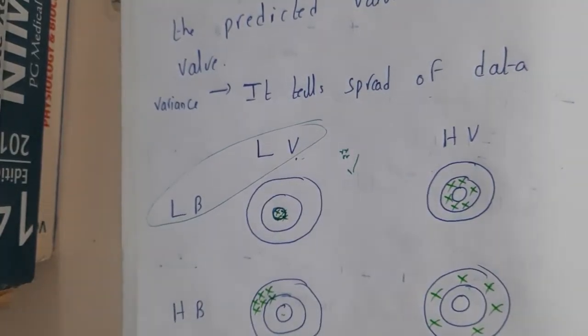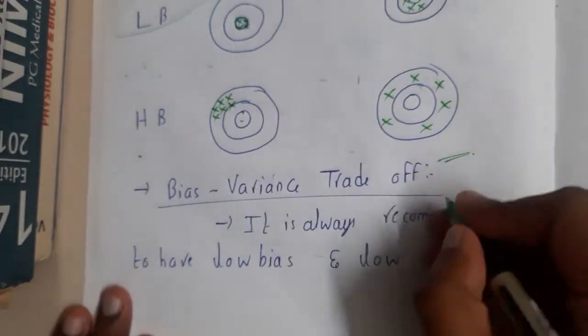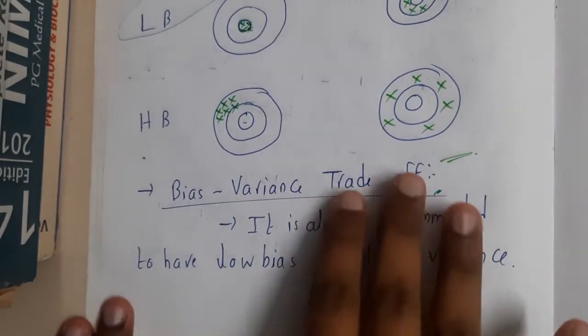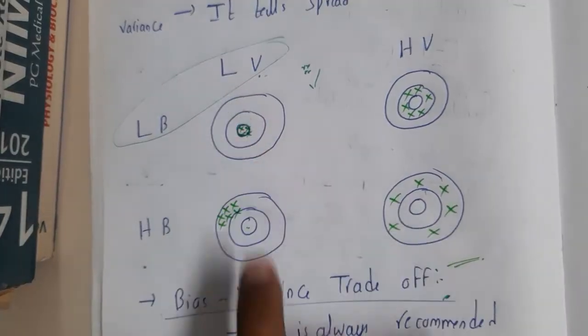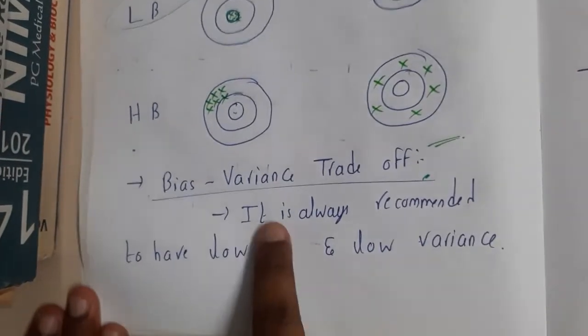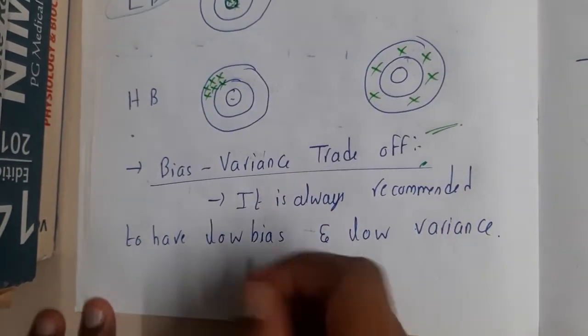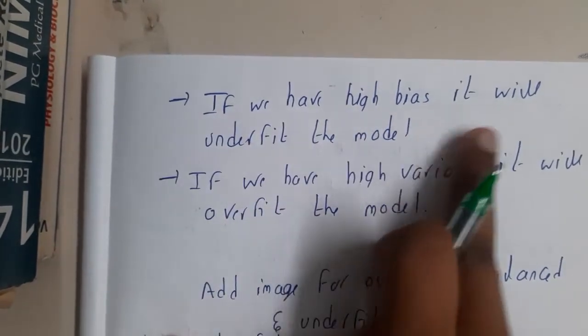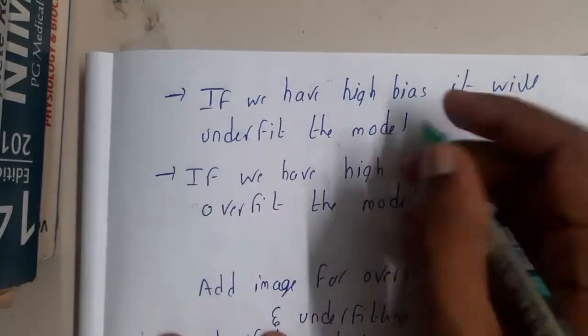The next topic is bias-variance tradeoff, which discusses this concept. It's recommended to have low bias and low variance. If we have high bias, it will underfit the model.